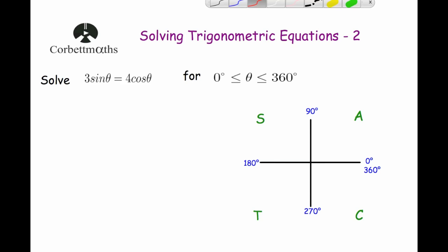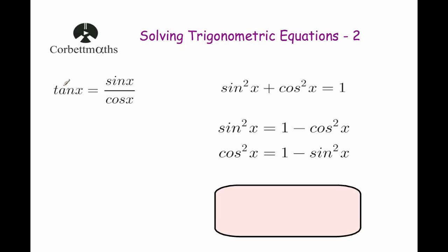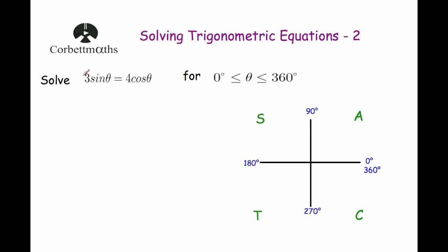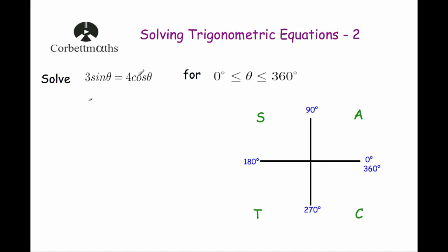Let's have a look at our first question: solve 3 sine β equals 4 cos β, for β between 0 and 360 degrees. We've got 3 sine β and 4 cos β, which doesn't look like the examples from Solving Trigonometric Equations 1. What we're going to do is use the identity tan x equals sin x divided by cos x. If we divide both sides of the equation by cos β, that gives us 3 sine β over cos β equals 4.